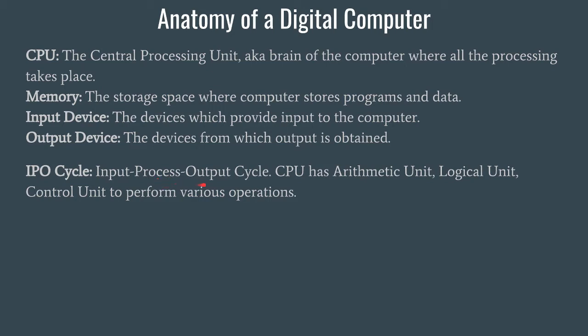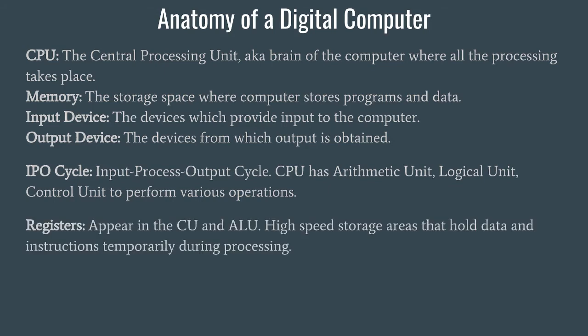After processing, we get an output. For example, if we instruct the computer to print a document or PDF file, we get the output through the printer on a page. This Input-Process-Output cycle runs from start until the computer is switched off, and it is common to any kind of computer — mobile phone, PC, desktop, mainframes, or supercomputers — every computer takes input, processes it, and gives a definite output.